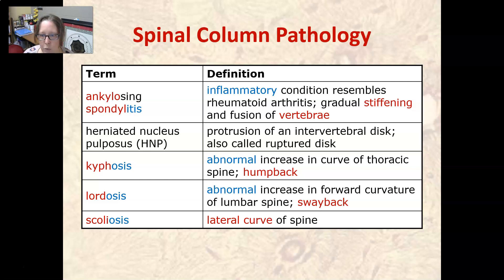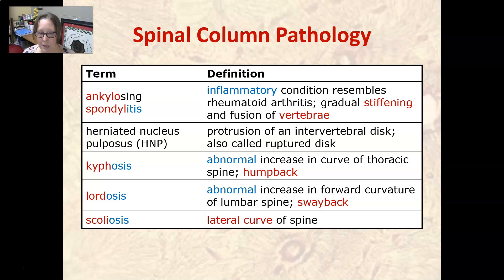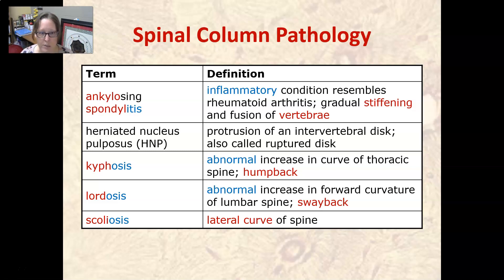Kyphosis is an abnormal increase in the curve of the thoracic spine. It is also referred to as humpback, so a hunched position. Lordosis is an abnormal increase in the forward curvature of the lumbar spine, and it's also called swayback. One way to remember lordosis is to think of store mannequins with their hips forward and shoulders back — that's a lordosis-type position.